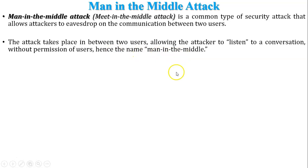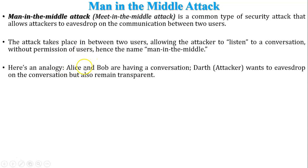Here is one analogy. There are two users — one is Alice and the second is Bob — both communicating with each other. Alice and Bob are having a conversation. Here, Darth, the attacker or hacker, wants to eavesdrop and capture messages from the conversation but also remain transparent, so Alice and Bob have no idea the attacker is trying to listen to their messages.